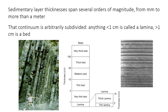We subdivide that continuum of bed thicknesses somewhat arbitrarily into things called laminae, which are defined as being less than a centimeter thick, and beds, which are defined as being greater than a centimeter thick. For example, rocks can be thickly laminated if the layering is between 3 and 10 millimeters, or thin bedded, or medium bedded, and so on.